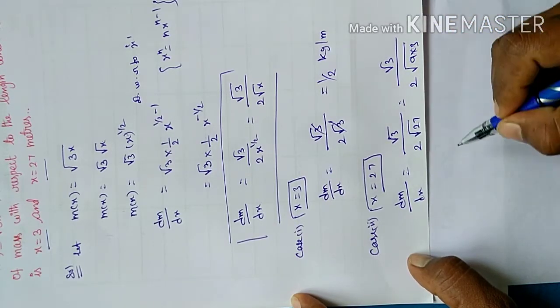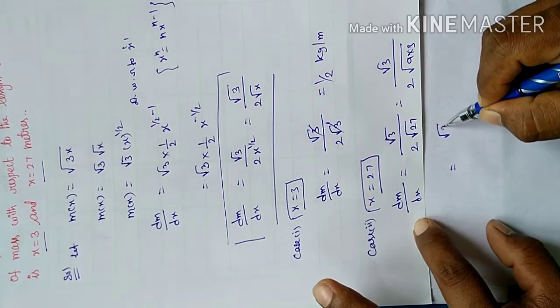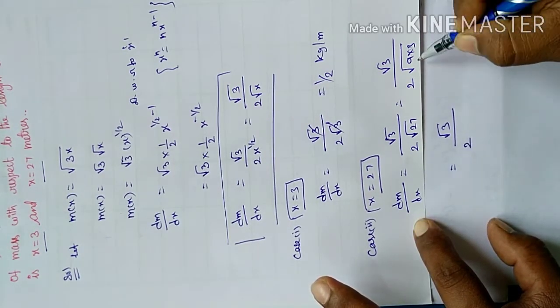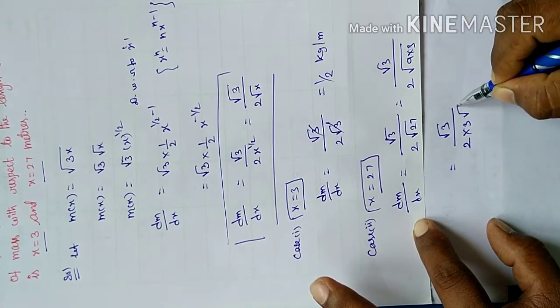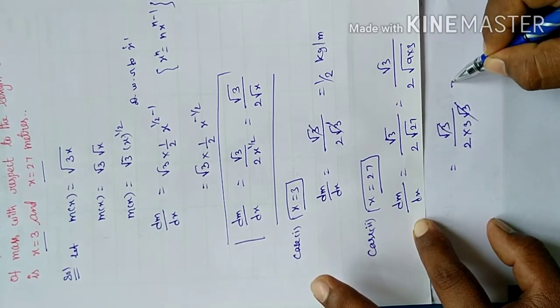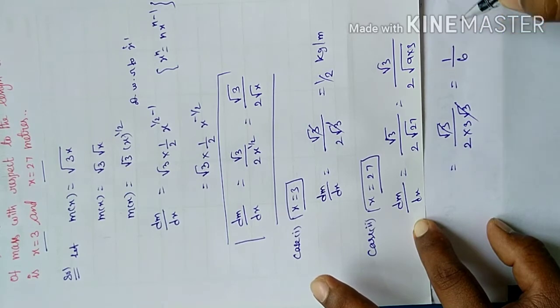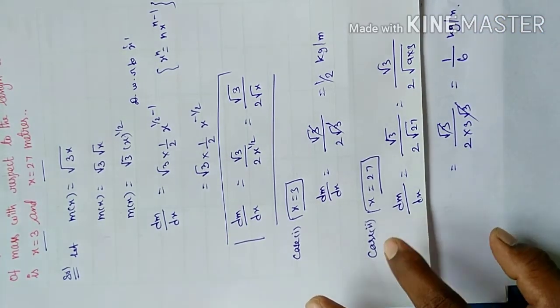Therefore root 3 by 2 times 3 times root 3. The root 3 cancels. 1 by 2 times 3 is 3 by 2 or 1.5 grams per meter. Hence solved.